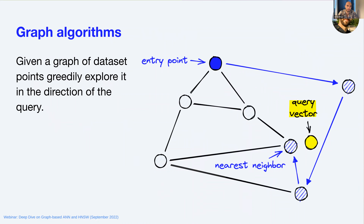The general idea of a graph algorithm in approximate search is: given a set of points, we arrange them into a structure where we can navigate across it. You start at an entry point, look at the neighbors of your current node, and ask which one is closest to your query — highlighted in yellow. You move to that neighbor, then repeat: find which neighbors are closer, move to that one, and eventually reach a point where no more neighbors are closer to your query — that's your nearest neighbor.